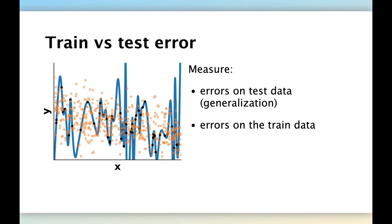Here you see again the same example where we have our black training data points and we fit a blue prediction function, which is a large degree polynomial. We have the orange data points that have not been seen during training and are there to evaluate the test error. The goal is to predict y given x. We want to quantify the quality of the model by measuring errors on the test data, which is the fundamental objective of machine learning — to make predictions that generalize to unseen data. We can also quantify the error on the training data, and by contrasting the two we get a better picture of what happens to our model.